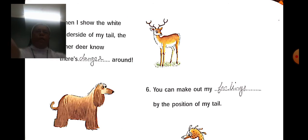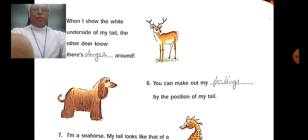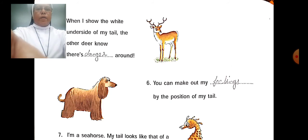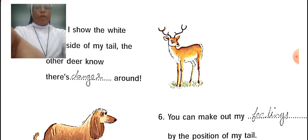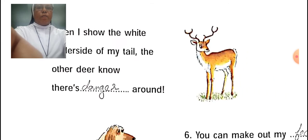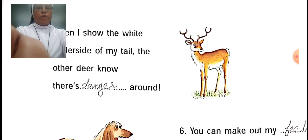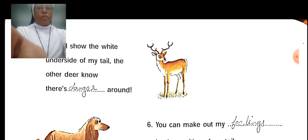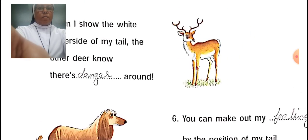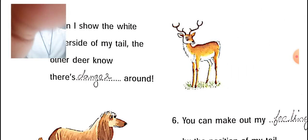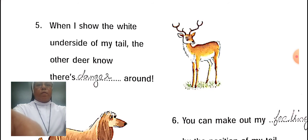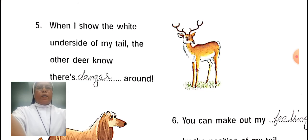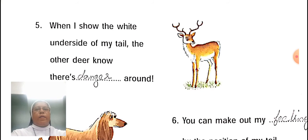Deer — what does the deer do with its tail? When I show the white underside of my tail, the other deer know there is danger around. Some danger around — they can understand this signal.